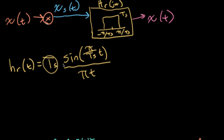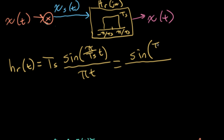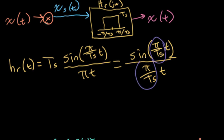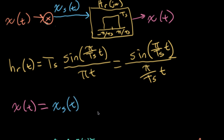There's an interesting structure here with this TS. Let's divide the numerator and denominator by TS, so we could write this as sine of π over TS times t, all over π over TS times t. This is nice because now we have a similar π over TS structure throughout. So what does it mean to reconstruct the signal to get x of t back?